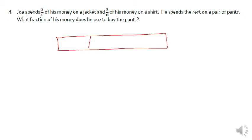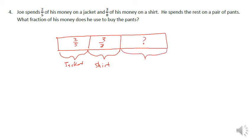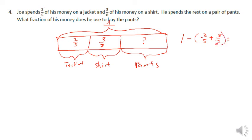Let's start with a tape diagram for the next problem. Joe spends two fifths of his money on a jacket and three eighths of his money on a shirt. We want to know what fractional part he spent on pants. The total on top is one — meaning all of his money. The tape diagram shows one minus the amount spent on the jacket plus the shirt equals what he spent on pants. We start by adding two fifths plus three eighths.